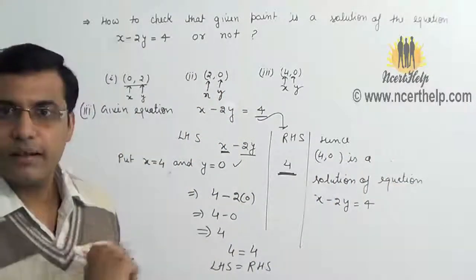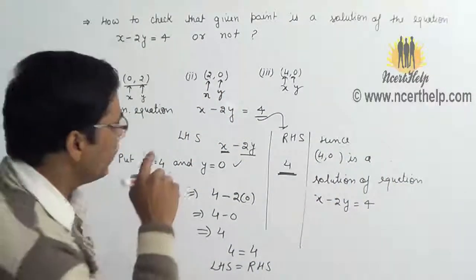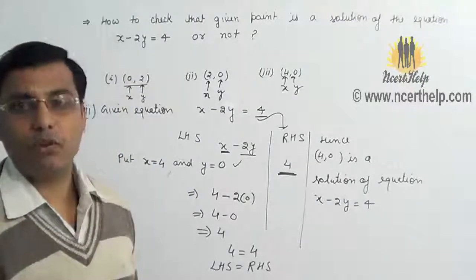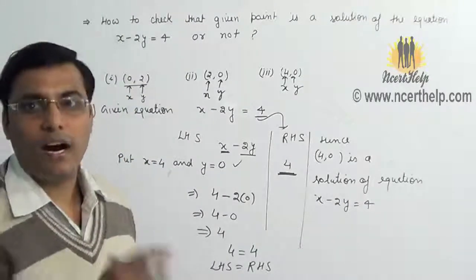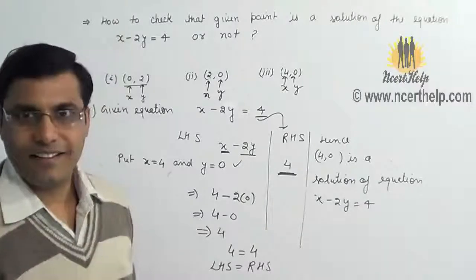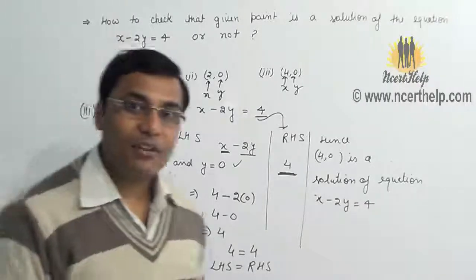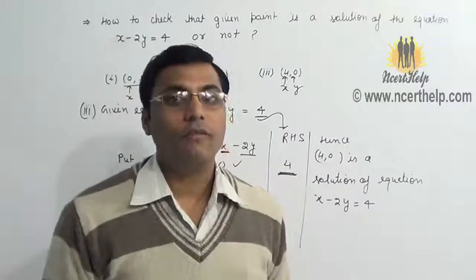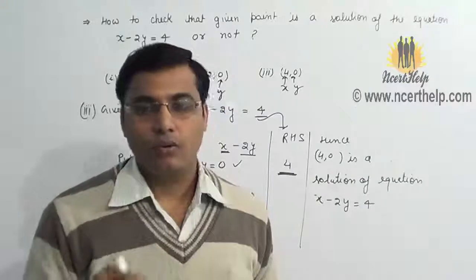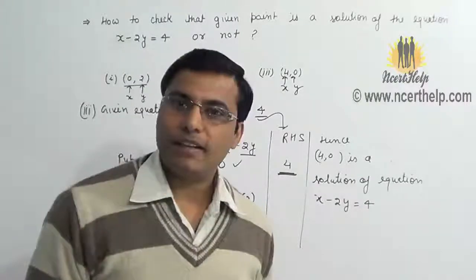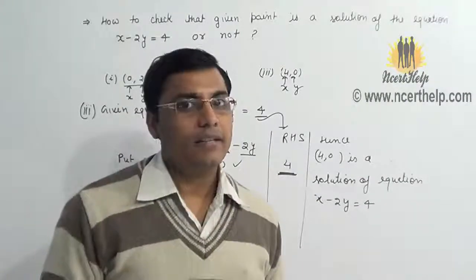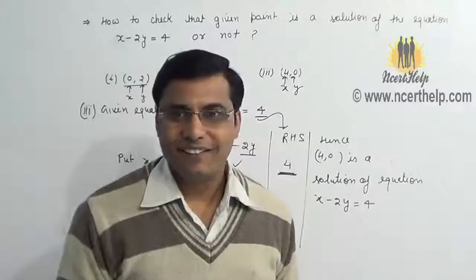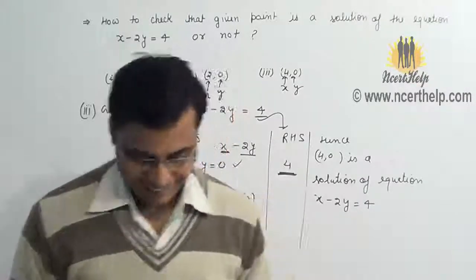Hence the given point 4 comma 0 is a solution set of the given equation. So with this method you can check that the given point is the solution of a given equation or not. If you like our video, please subscribe to the channel and don't forget to like and share our video on Facebook. Thank you.